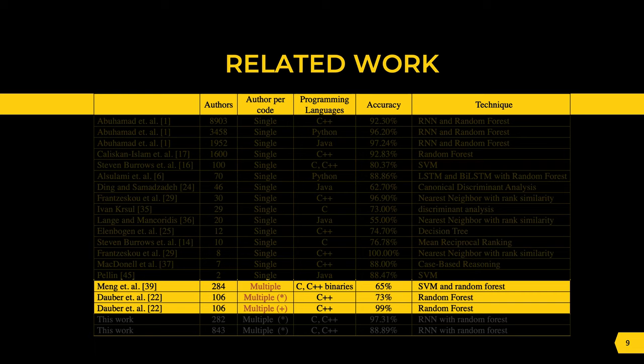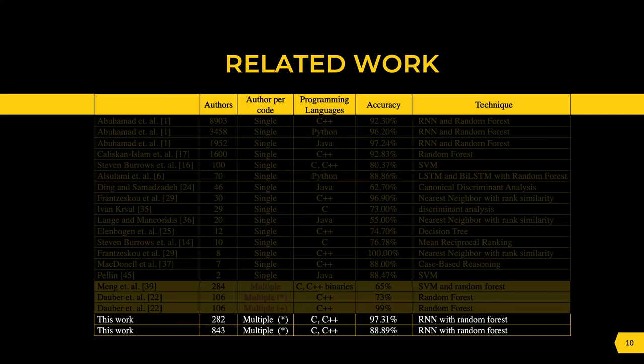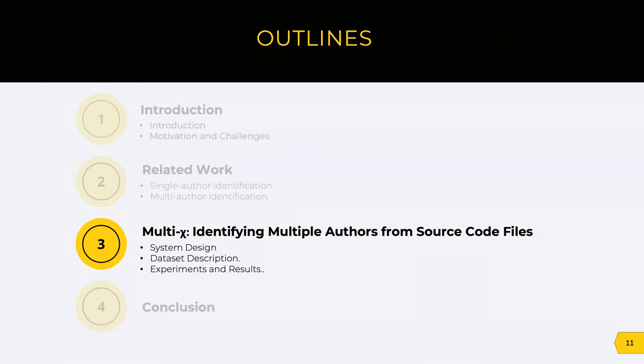Another difference is that the prior work achieved an identification accuracy of 99% for 106 programmers, given that each programmer had at least 150 code samples, and considering aggregating attributes of multiple samples to achieve this accuracy. In our work, we consider identifying authors based on a single sample attribution and raise the challenge to scale to even more authors in open source projects. Our work achieved remarkable results even when scaling to a larger dataset. Now let's have a look at our proposed system.